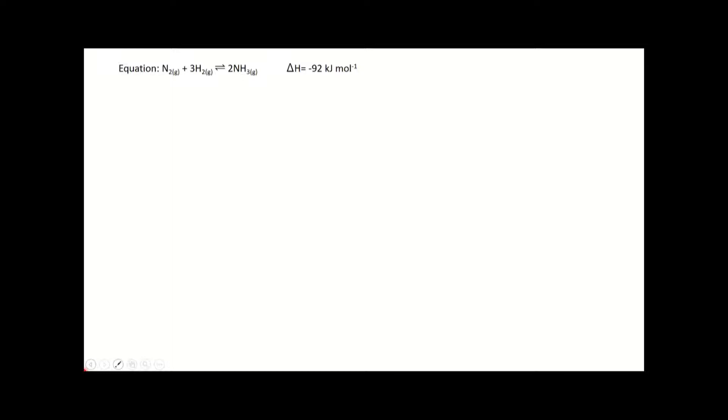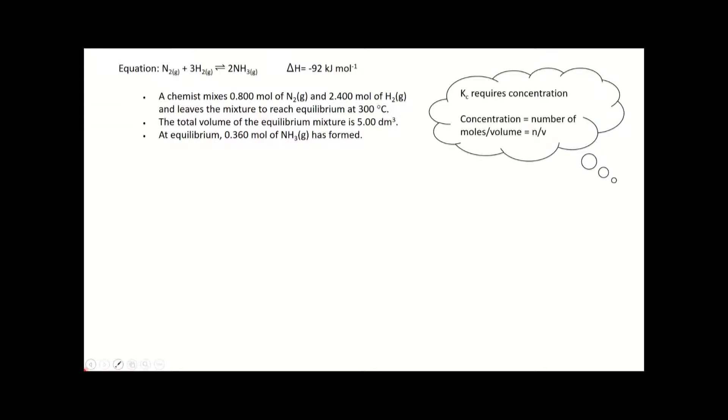Here's the equation - the Haber process. We have the equation with state symbols, and we know it's an exothermic reaction with the enthalpy change negative. A chemist will mix 0.8 moles of nitrogen gas and 2.4 moles of hydrogen gas and leave the mixture to reach equilibrium at 300 degrees C. The total volume is 5 decimeters cubed, and at equilibrium, 0.36 moles of ammonia has formed. We're asked to calculate Kc, which is an equilibrium constant related to concentration.